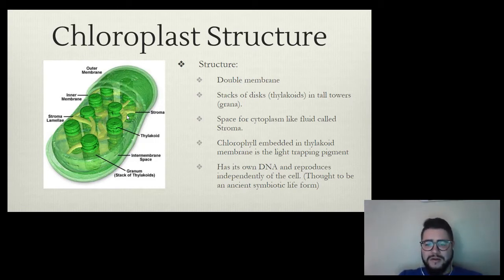A pigment called chlorophyll, which is responsible for absorbing the light needed for photosynthesis to occur, lives inside the thylakoid membranes. A chloroplast has its own DNA and is actually able to reproduce independently of the cell. It is thought to be an ancient symbiotic life form that was once absorbed by a larger cell.